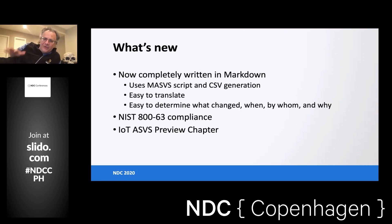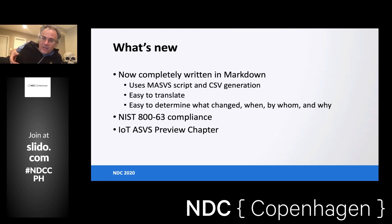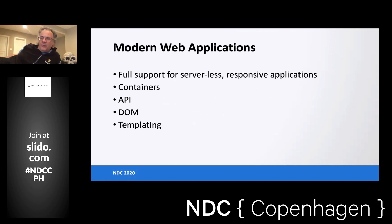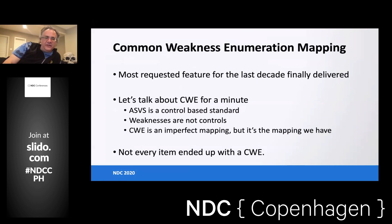We had an IoT section, but IoT is not specifically web — IoT is its own thing. So we ripped out all the IoT requirements that were newly written for 4.0, and instead of adding them to the 4.0 standard, we just did a preview appendix chapter. The requirements are there, but they're not mixed in with web. We also changed requirements to address what a modern web application really is: full support for things like lambdas and containers, a lot more requirements around APIs, more requirements around DOM XSS since JavaScript clients are in vogue.